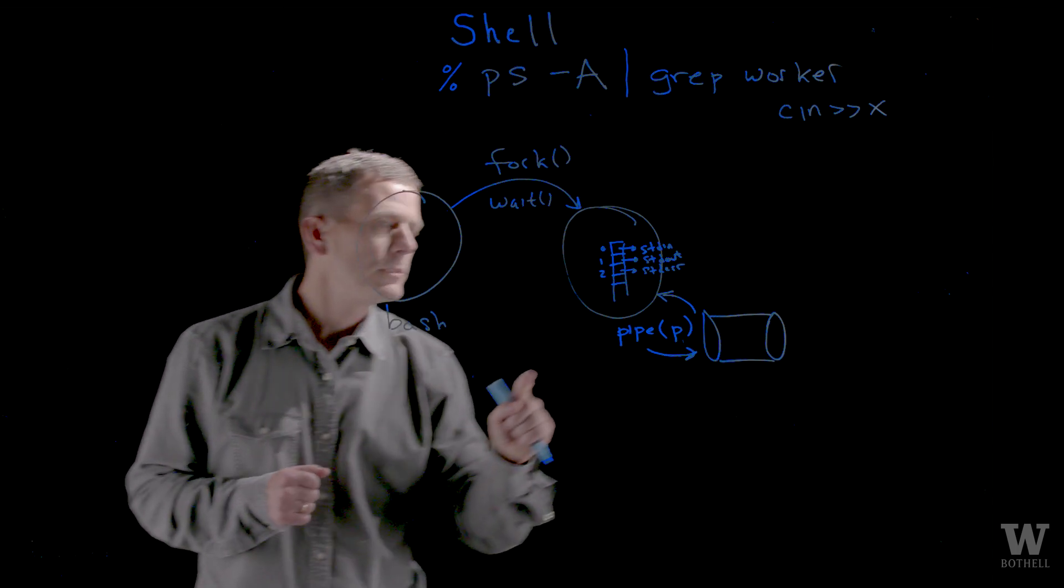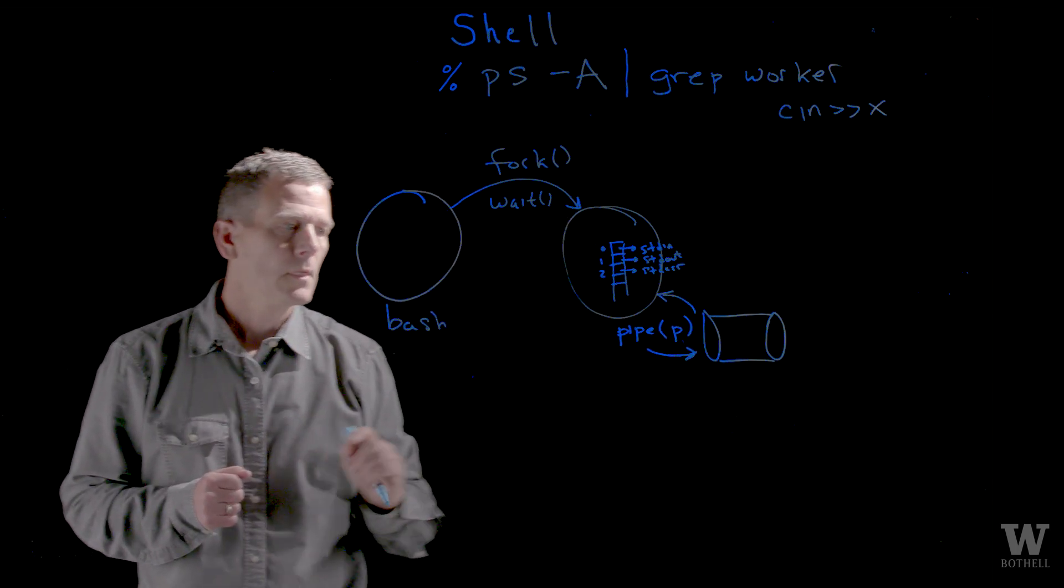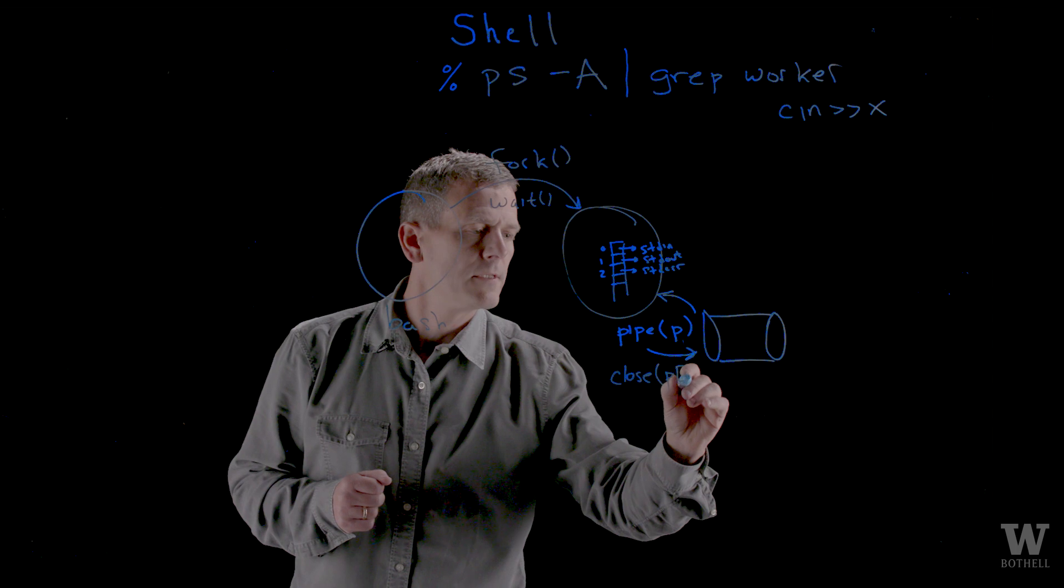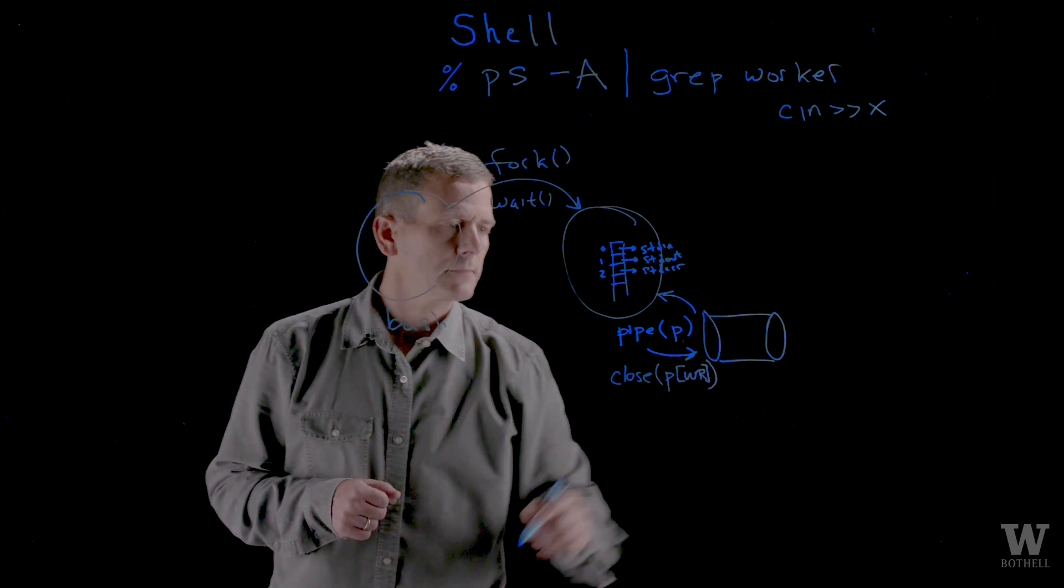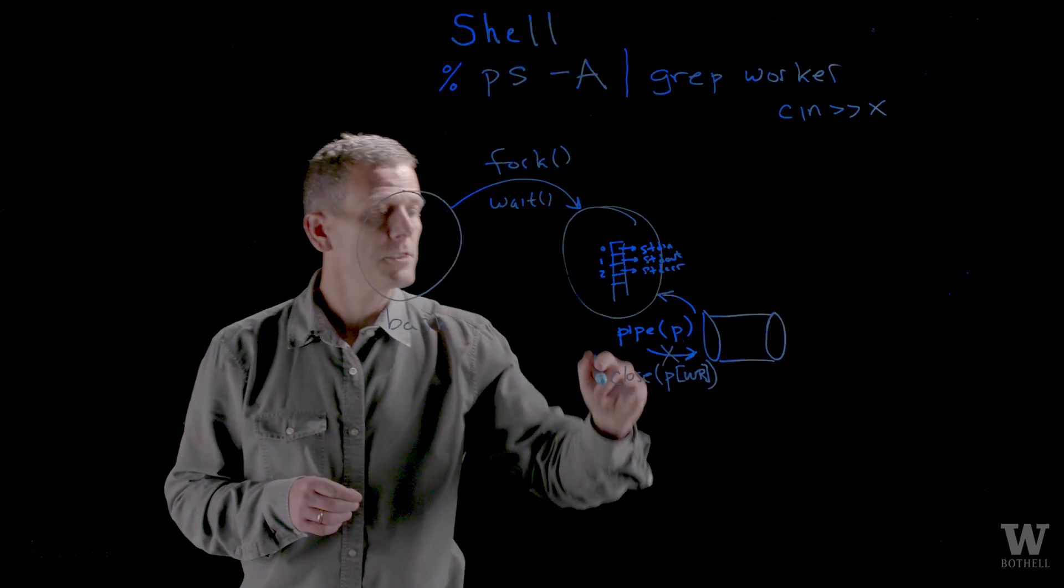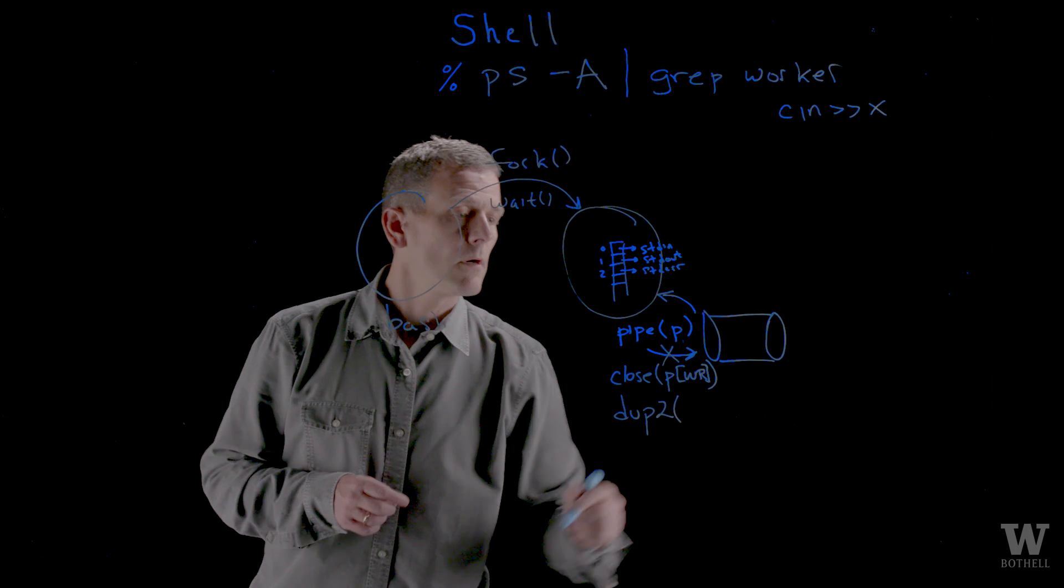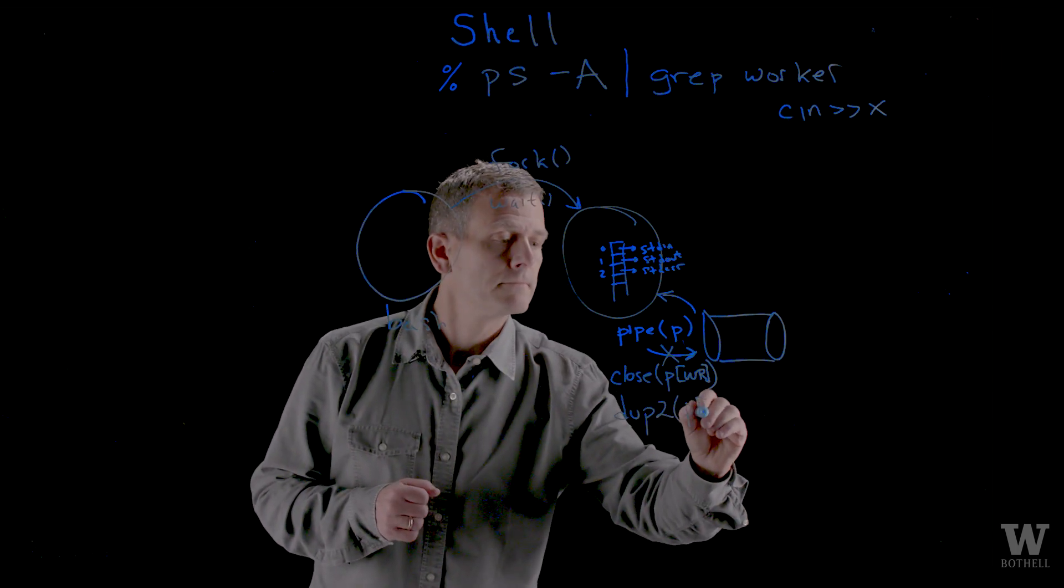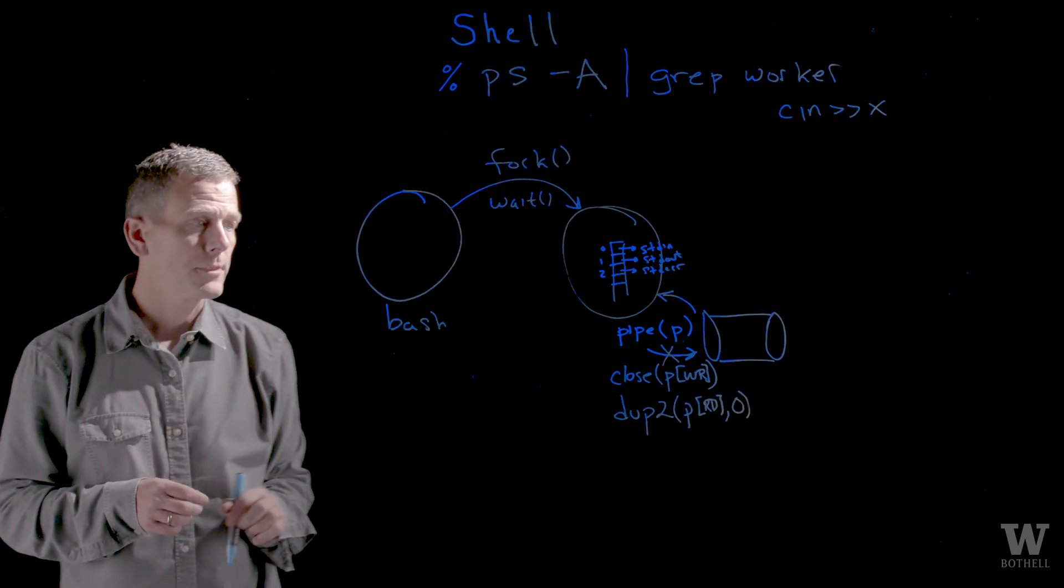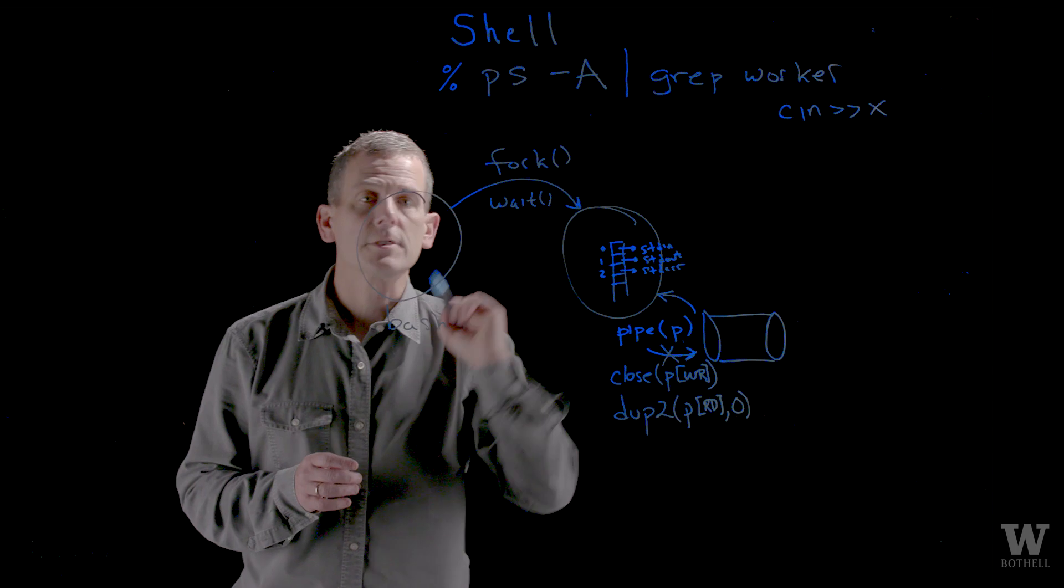What I want to do is I want to take my read side of the pipe and attach it to standard in. And so first let me close the write side of the pipe. And I'll write this pseudocode where I'm taking the pipe and I'm closing the write side. Then let me copy over the read side of the pipe to standard in. There's a system call called dup2 whereby I would take the read side of the pipe and copy it over to standard in, which is file descriptor 0. So what I've done here is closed the write side of the pipe and I've kind of redirected the read side of the pipe to standard in.